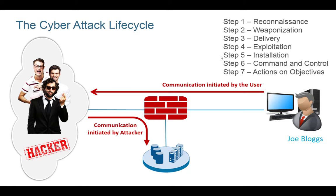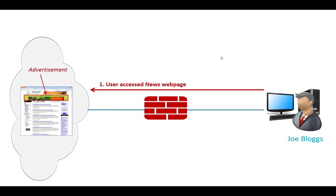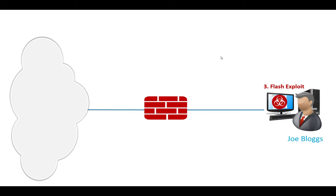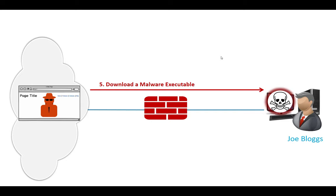I'm going to go through a specific example where the attack was done through an end-user device, simply because the end-user device in most cases is also the entrance to your data center. In this specific example, there was a user going to a news webpage — this was actually a real example from a customer we had some time ago. This was legitimate traffic since news is usually allowed by most companies. But as part of the webpage there was an advertisement, and as part of this advertisement the user downloaded a Flash file. Flash isn't something unusual, but this was a malicious Flash file which exploited a vulnerability on the user's PC and then in the background, without the user's knowledge, instructed the PC to go out to the internet and download another executable — a malicious executable file.